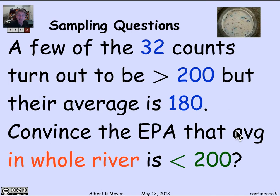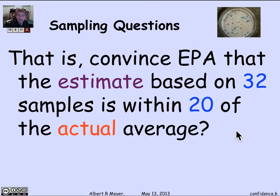Our task now is to convince the Environmental Protection Agency that on the basis of our data, the average in the whole river is really less than 200. Even though in a couple of places it was over 200, on average it was 180. Can we convince the EPA that the actual average is less than 200? We're trying to convince them that our estimate based on the sample is within 20 of the actual average.